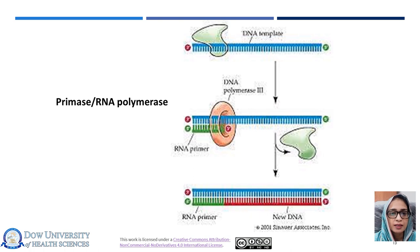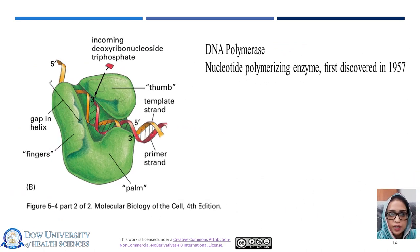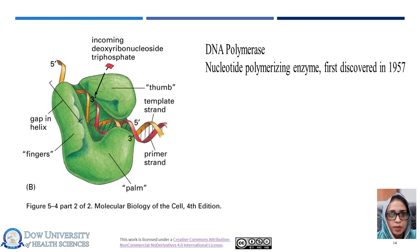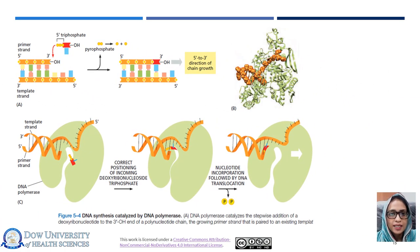Primers in DNA replication are synthesized by a set of proteins called the primosome, of which the central component is an enzyme called primase — a type of RNA polymerase. Primase synthesizes a short approximately 8 to 12 nucleotide stretch of RNA complementary to a specific region of the chromosome. The first nucleotide polymerizing enzyme, DNA polymerase, was discovered in 1957 by Arthur Kornberg. The substrates are deoxyribonucleoside triphosphates, and their polymerization requires a single-stranded template. DNA polymerase catalyzes the stepwise addition of deoxyribonucleotides to the 3' hydroxyl end of the growing strand, paired to the template strand, polymerizing in the 5' to 3' direction.